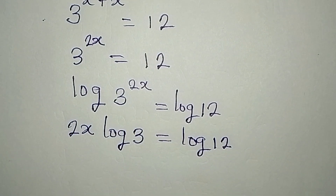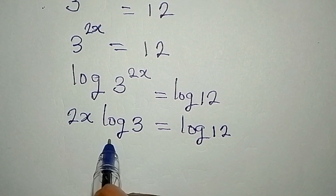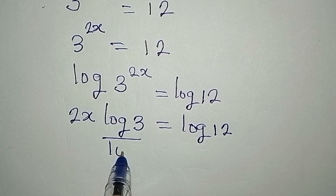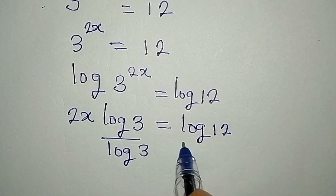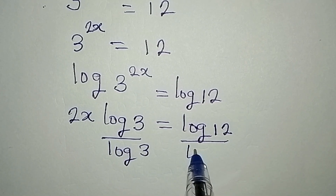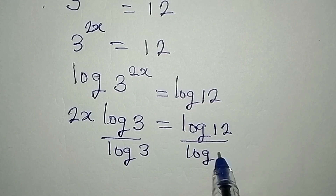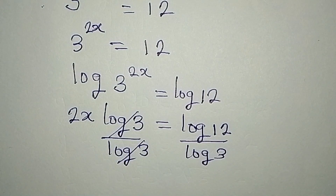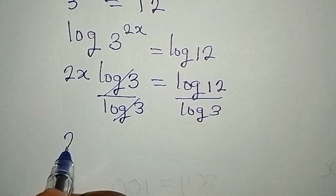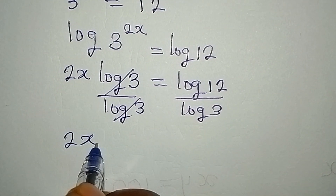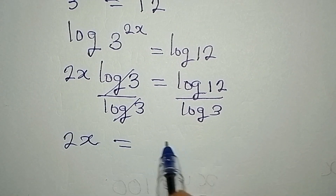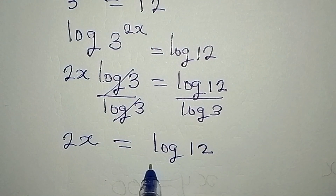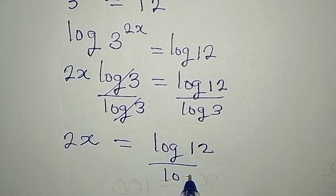Now we divide both sides by log 3. This divides with this, so that 2x is equal to log 12 over log 3.